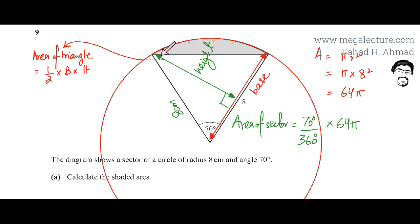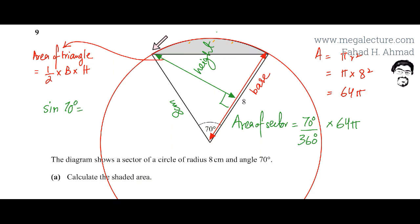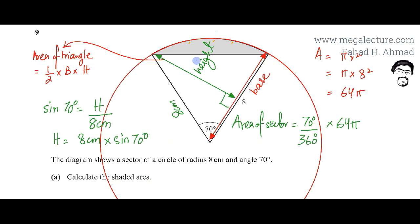We have the angle of this sector — 70 degrees — and one side of 8 centimeters. We can find the height using sine of 70. Sine of 70 degrees equals the opposite side divided by the hypotenuse, so it's height H divided by 8 centimeters. Therefore, H equals 8 centimeters multiplied by sine of 70 degrees. That gives us the perpendicular height of this triangle.